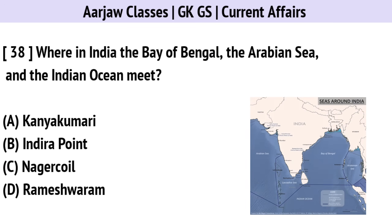Where in India do the Bay of Bengal, the Arabian Sea, and the Indian Ocean meet? The correct option is A — Kanyakumari.